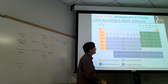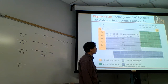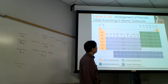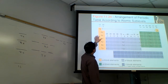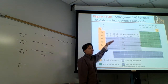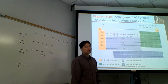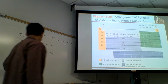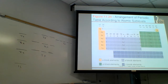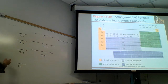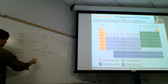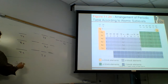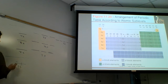The periodic table is arranged by shells. The first shell would be the top row, or the top period of the periodic table. The first shell is the 1s, so we need two electrons first. The first electron would be like hydrogen, one electron, and then helium would fill this shell.